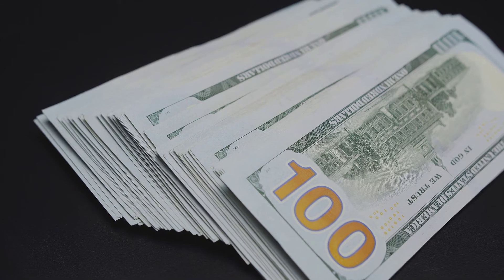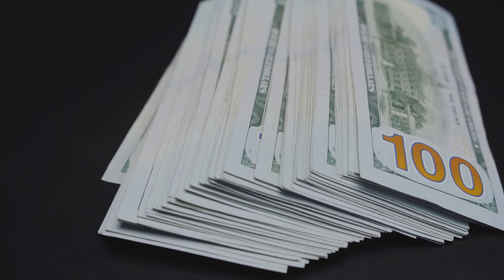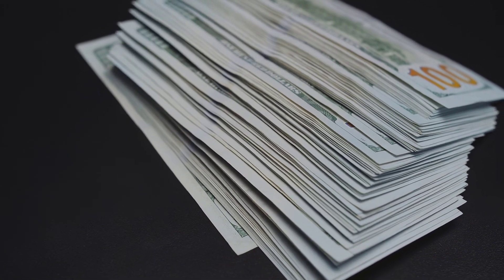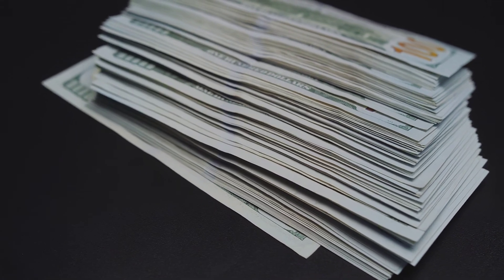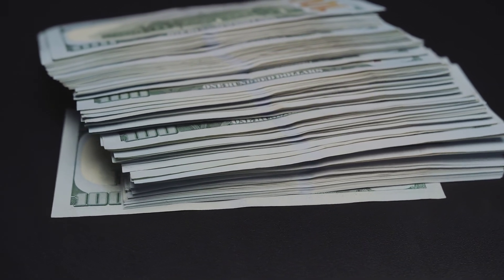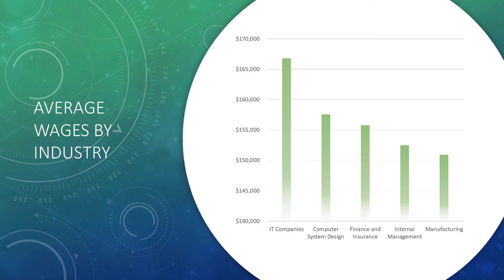Pay: The median annual wage for computer and information systems managers was $151,150 in May 2020. The median wage is when half the workers in an occupation earned more than that amount and half earned less. The lowest 10% earned less than $90,430, and the highest 10% earned more than $208,000. In May 2020, the median annual wages by top industry were: information technology companies $166,770, computer systems design and related services $157,580, finance and insurance $155,760, and management of companies and enterprises $152,480.